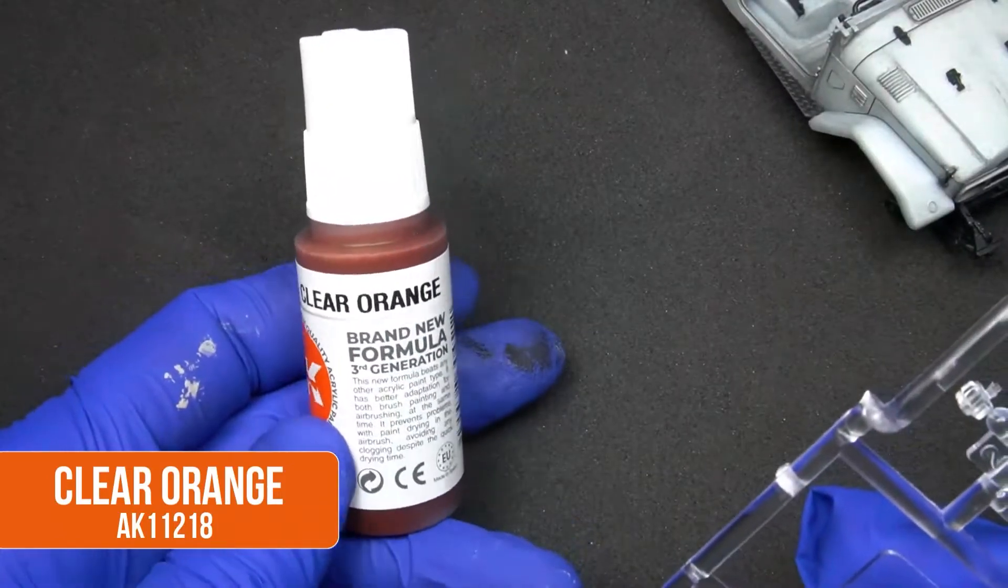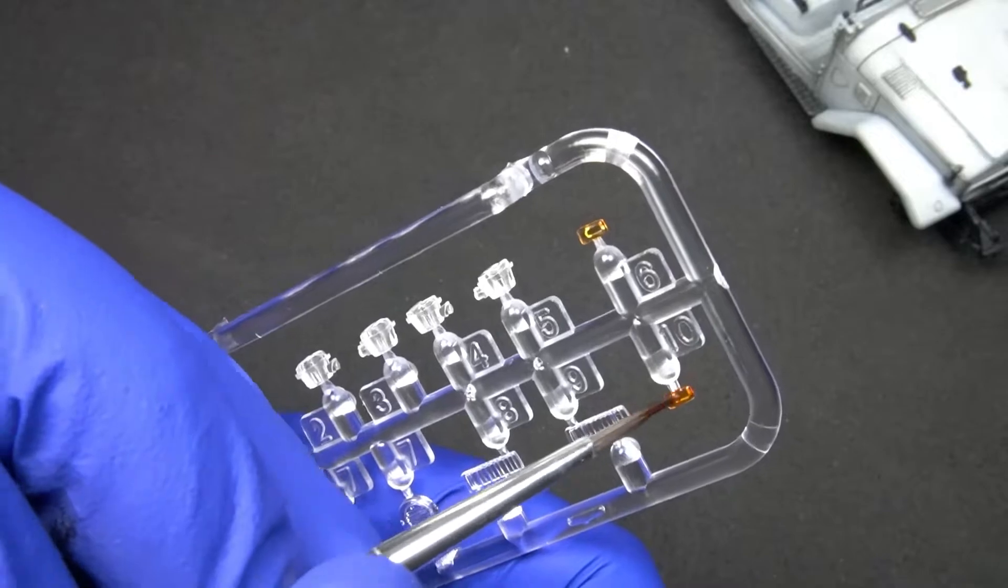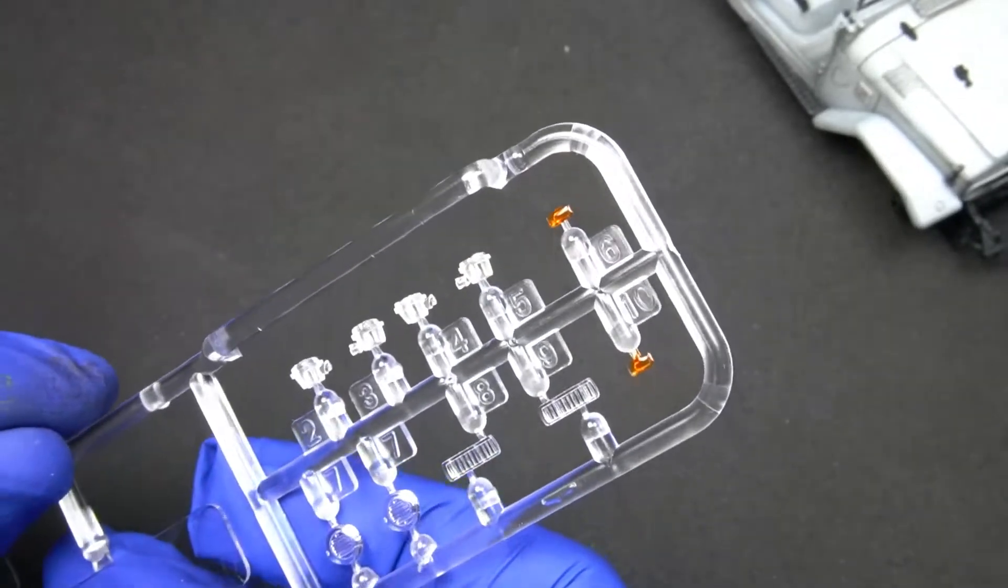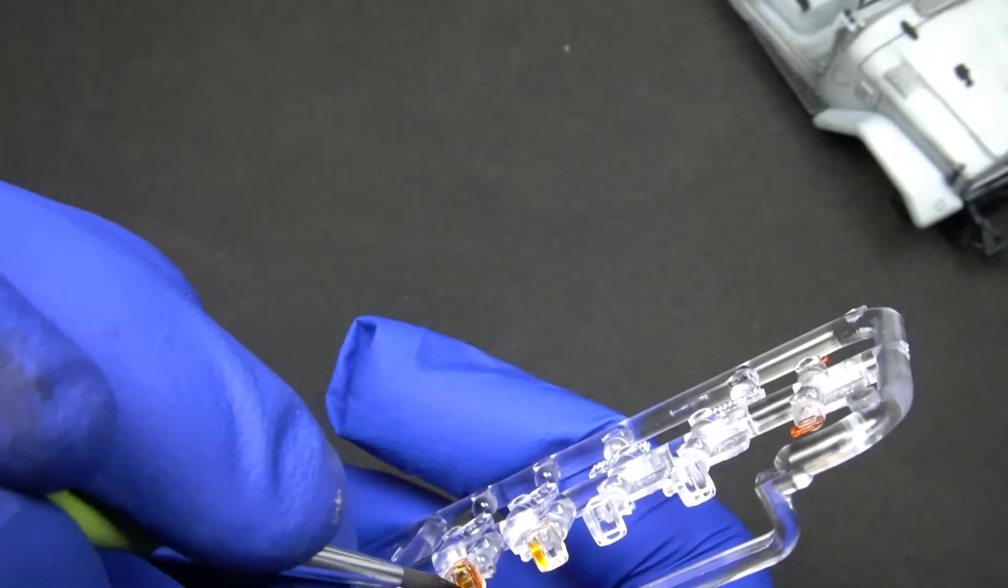Let's start working on the transparent parts. AK Interactive offers a range of paints specifically designed for painting this kind of pieces. We just need to apply the undiluted paint directly over the piece and, once dry, it will be ready to be placed on our mobile.